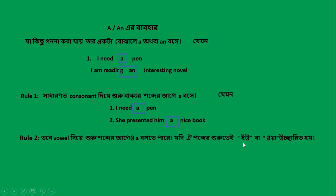A, E, I, O, U — এই পাঁচটি যদি কোনো word এর শুরুতে আসে এবং সেই vowel-এর উচ্চারণ vowel-এর মতো হয়, তাহলে U আসলে 'an' বসে।